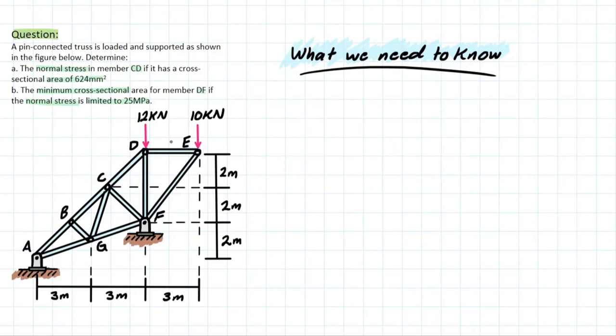The problem is giving us a lot of variables right off the rip, so we should probably look into what we actually need to know before hopping into each part. For part A, we know it's asking for normal stress in member CD. Normal stress is represented by the force perpendicular to the cross-sectional area. We're given the area of the member, which is 624 millimeters squared.